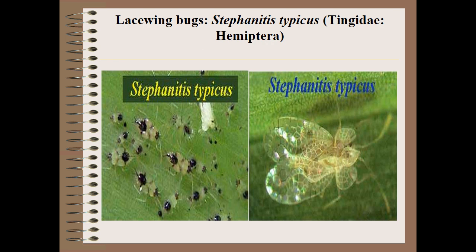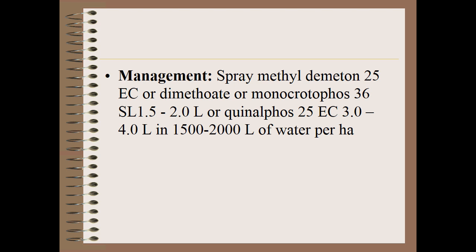The next pest is Lacewing bug, Stephanitis typicus, family Tingidae, order Hemiptera. Both nymphs and adults feed in colonies on the under surface of leaves and cause discoloration. Adults are very small, dull-colored or white bugs with transparent, shiny, lace-like reticulated wings. Nymphs are black in color. For management, use methyl demeton, dimethoate, monocrotophos, quinalphos, or any other systemic insecticide.